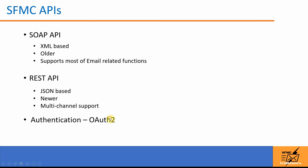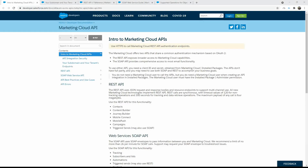You can also use OAuth2 authentication for both the REST and the SOAP APIs. We will need an access token, which we can get through an OAuth API call, and we will see how to get this in a future video.